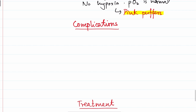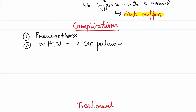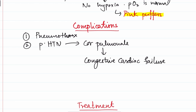Complications of emphysema include: pneumothorax — particularly in distal and irregular types, which is potentially fatal; pulmonary hypertension, which in advanced cases leads to cor pulmonale affecting the right side of the heart; and congestive cardiac failure. Cor pulmonale can also lead to respiratory acidosis. All of these complications are dangerous and can be fatal. On a long term, COPD often progresses to death.